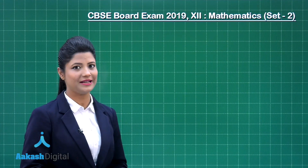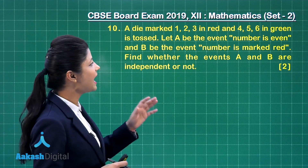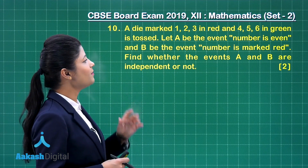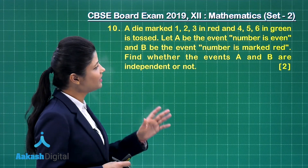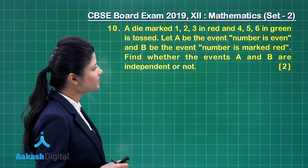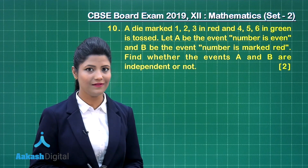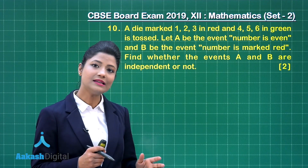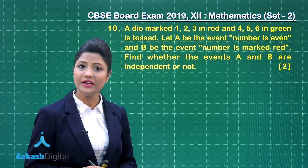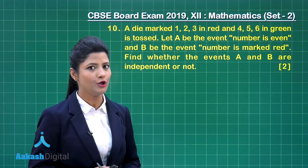Let's take up question number 10. A die is marked 1, 2, 3 in red and 4, 5, 6 in green and is tossed. Let A be the event that the number is even and B be the event that the number is marked red. Find whether events A and B are independent or not. For independent events, P(A ∩ B) = P(A) * P(B).